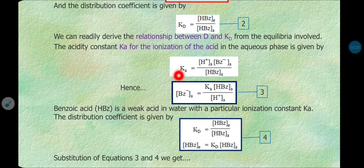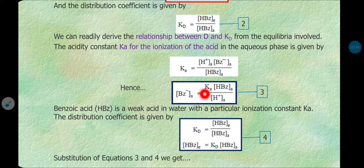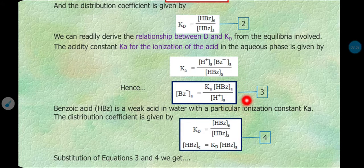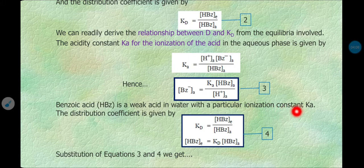Rearranging this equation, we can determine the concentration of benzoate anion in aqueous solution. The concentration of benzoate anion in aqueous equals Ka times the concentration of benzoic acid in aqueous divided by the H⁺ ion concentration in aqueous. This is equation 3. Similarly, since benzoic acid is a weak acid and partially ionized, its ionization constant is Ka.